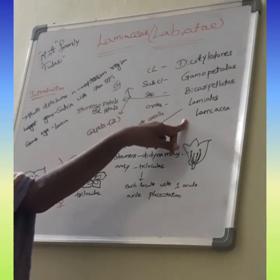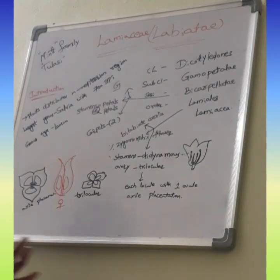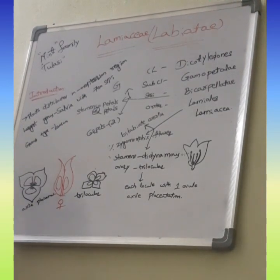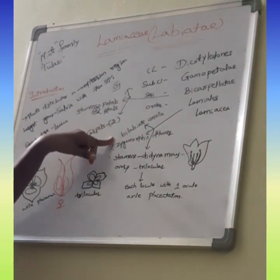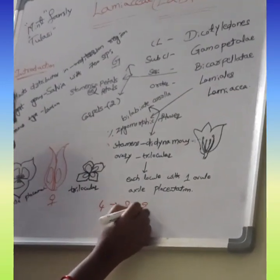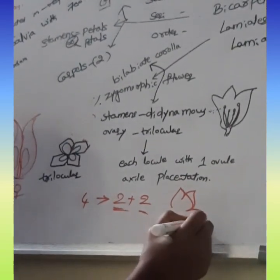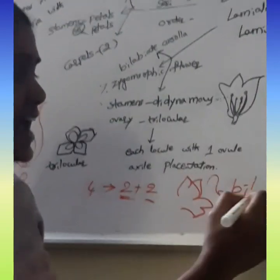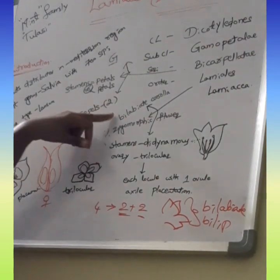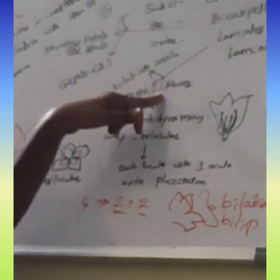Why it is kept in LAMIALES? Some reasons are there. The COROLLA, having the PETALS, those PETALS are BILABIATE, BILIPPED, TWO LIPS. Those PETALS are arranged as TWO LIPS. Due to the presence of the TWO LIPS, for example, if PETALS are 4 in NUMBER, those are 2 plus 2 in ARRANGEMENT. Two PETALS are arranged in UPPER LIP, two PETALS are arranged in LOWER LIP.